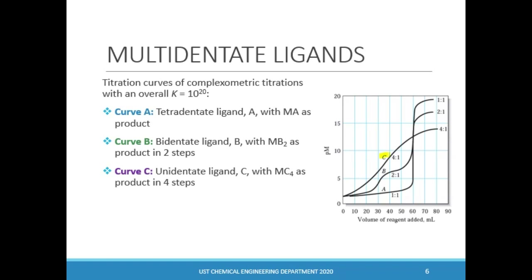Say we have a metal with a coordination number of 4, meaning it can form 4 metal-ligand bonds. A tetradentate ligand can bond with a metal in a one-step, one-to-one reaction. Curve A shows a very steep curve which easily marks the equivalence point. Uni- and bidentate ligands tend to bind with metals in a stepwise manner. A bidentate ligand requires a two-step reaction in a two-to-one ratio, while a unidentate ligand results in a four-step reaction with a four-to-one ratio. The equivalence point becomes less distinct for uni- and bidentate ligands as shown in curves C and B, respectively.